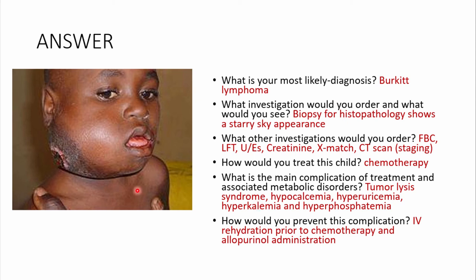Treatment is chemotherapy. One complication is tumor lysis syndrome — a complication of chemotherapy or radiotherapy, especially with very large tumors. As cells are killed, they release their contents into the bloodstream, causing hypocalcemia (calcium deposits where tissue is dying), hyperuricemia, and hyperphosphatemia. To prevent tumor lysis syndrome, hydrate the patient prior to chemotherapy and give allopurinol to block uric acid formation.